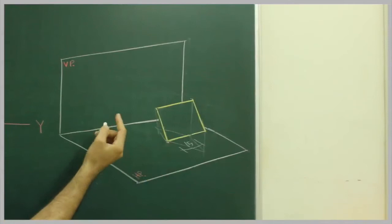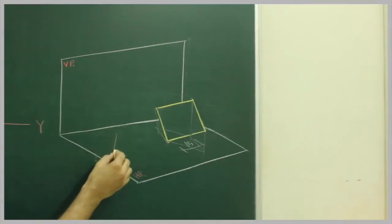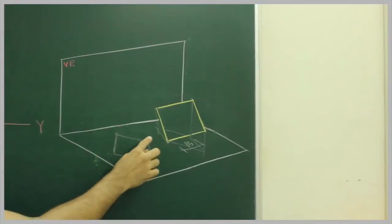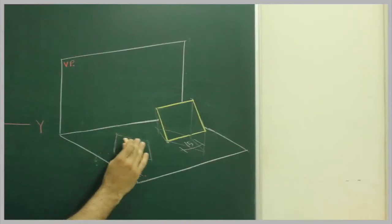So what we will do, first we will draw, since it is inclined to HP, first we will draw between HP and then we will do this second stage where it is seen as opposite from top view.